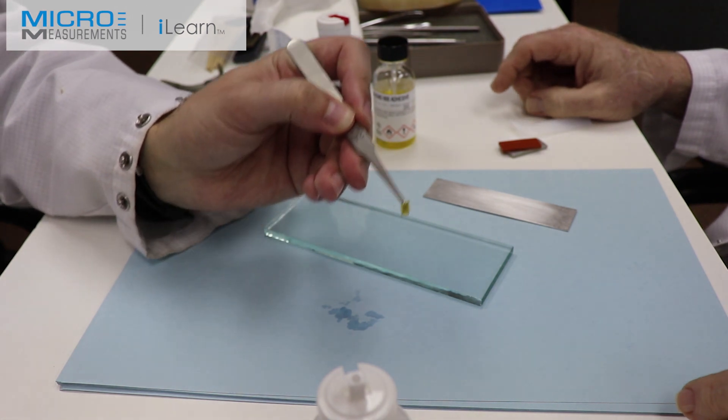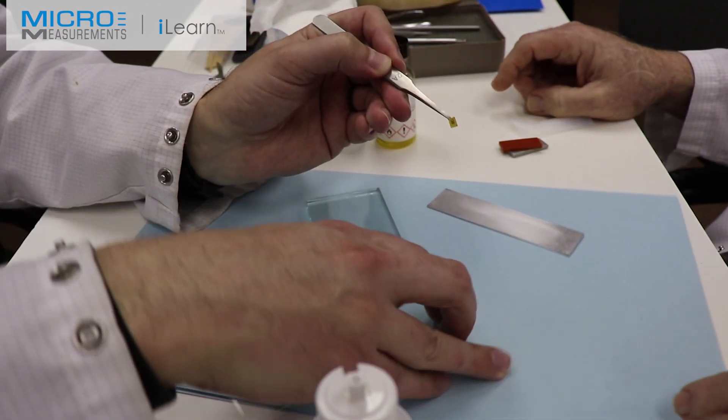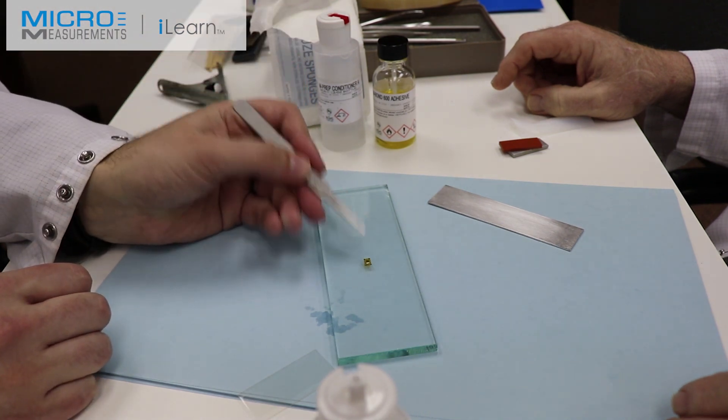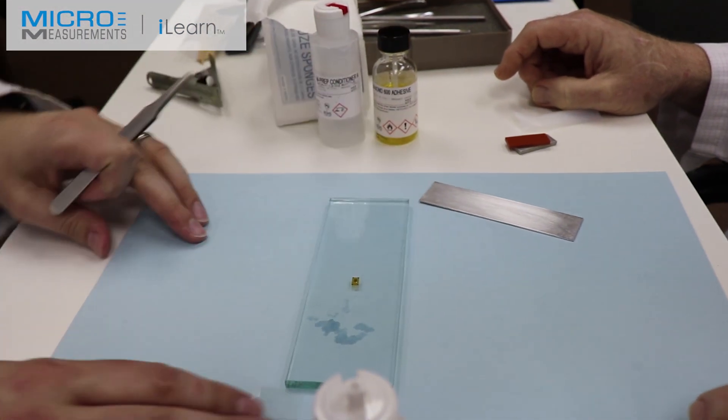He'll now lay that shiny side up. Notice there's a shiny side and a dull side to your gauge. He'll lay that shiny side up on the glass plate.